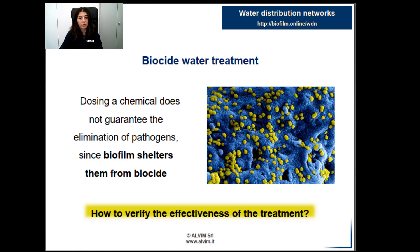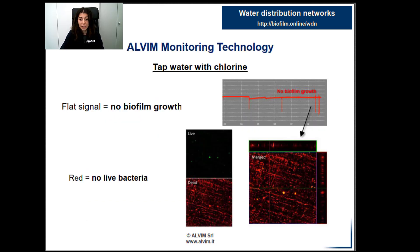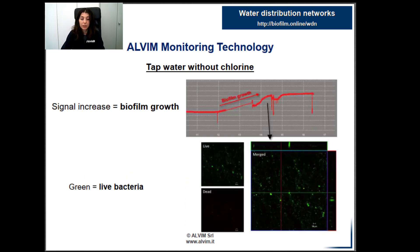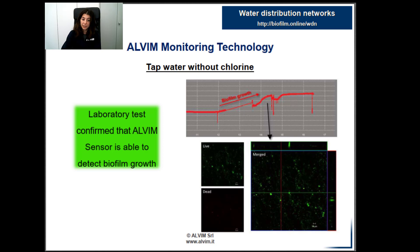With Alvim sensor, it's possible to verify the disinfection result and monitor in real-time biofilm growth. First laboratory test: tap water with chlorine. Alvim sensor showed a flat signal over time, as you can see in the graph above — that means no biofilm growth. Epifluorescence microscopy confirmed this result; coupons immersed in the same water were analyzed through live-dead staining, and red color means that all bacteria were dead. Second laboratory test: tap water without chlorine. After some days, Alvim signal increased, indicating biofilm growth. In the same way, fluorescence microscopy showed green color, which means live bacteria. So, laboratory tests demonstrated that Alvim sensor can detect in real-time biofilm development.